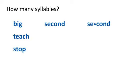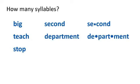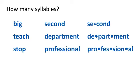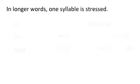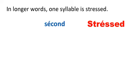Second has two syllables. Department has three. And professional has four. In each of these longer words, one syllable is stressed or pronounced more strongly. Can you hear the louder syllables when you say Second, Department, Professional?